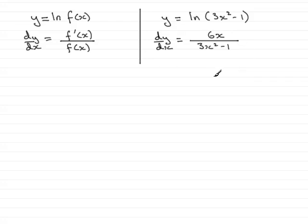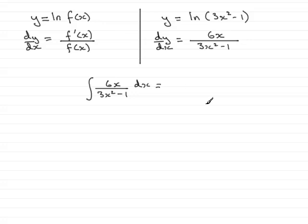Where is this all leading to? Well, if we differentiate something, then integration must be the inverse of that. So if I had to integrate 6x over 3x squared minus 1 with respect to x, then because the numerator is the differential of the denominator, it must have resulted from differentiating a natural log function — in this example, the natural log of 3x squared minus 1. We must always put natural logs in mod signs when we integrate, and then we have the constant of integration.